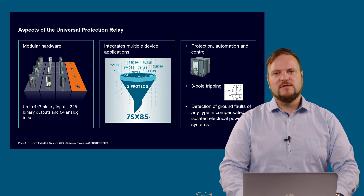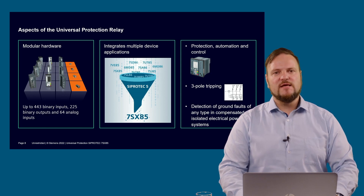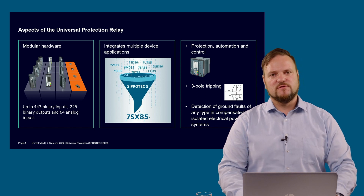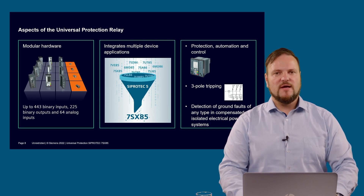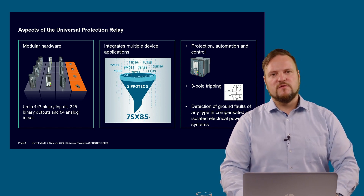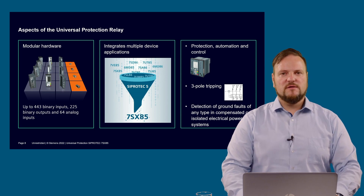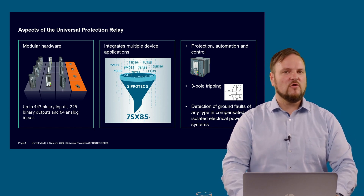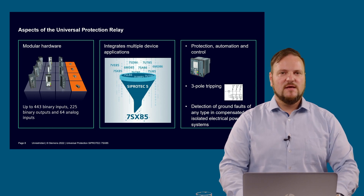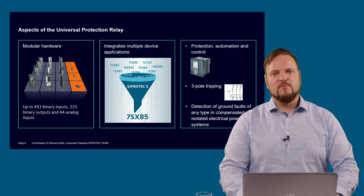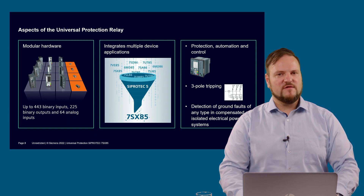The device functionality can be freely configured to fit the protection, automation, and control functions required in a three-pole tripping system, including selectivity and selective detection of all types of ground faults in compensated and isolated electrical power systems. The 7SX85 integrates multiple device applications.